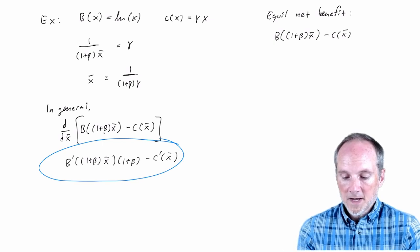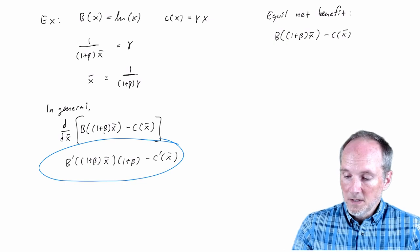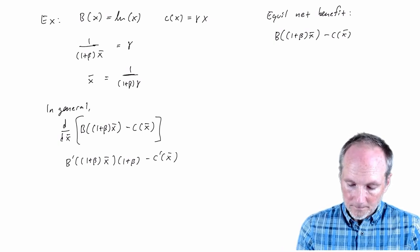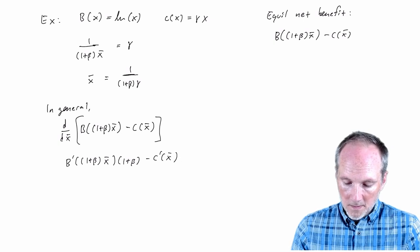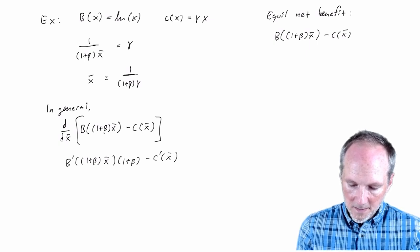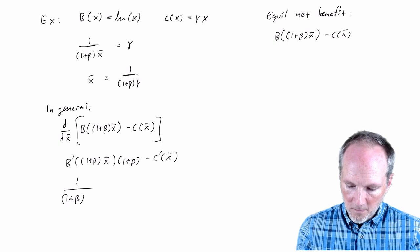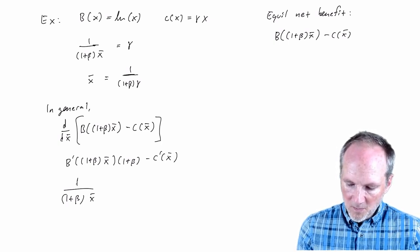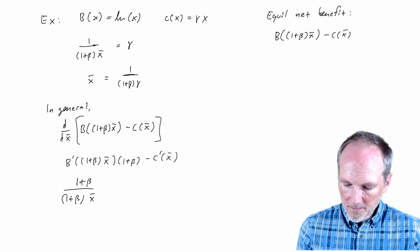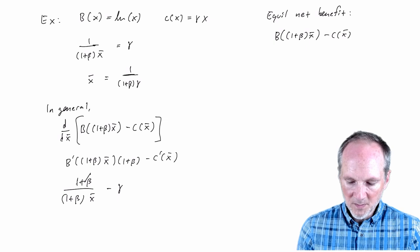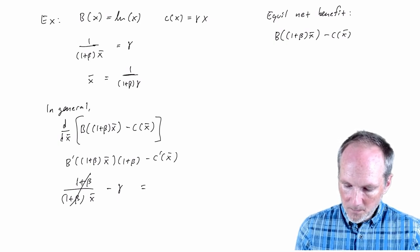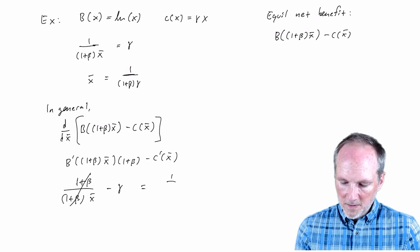And I'm going to argue that that's positive. In this example, you can just see that directly by plugging in. So in the example, the marginal benefit is just the log, so that would be one over one plus beta times X bar. And we're multiplying by one plus beta here. The cost is linear, so the marginal cost is just gamma, but of course the one plus betas cancel out. So this just reduces to one over X bar minus gamma.